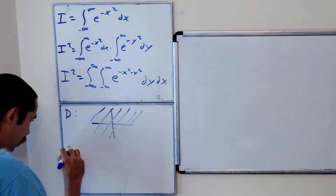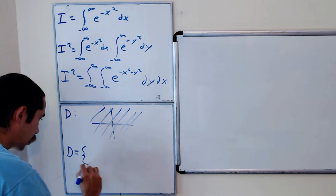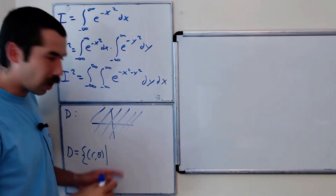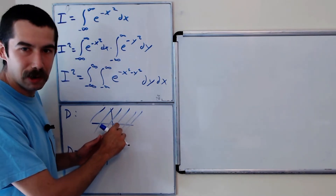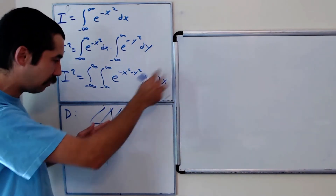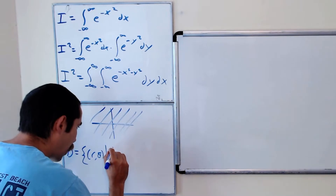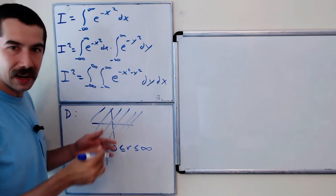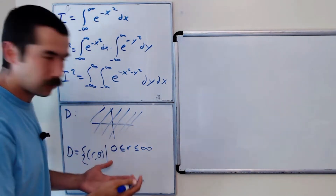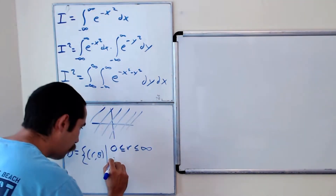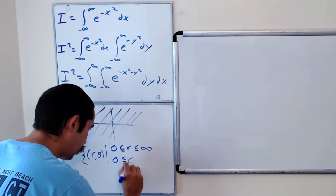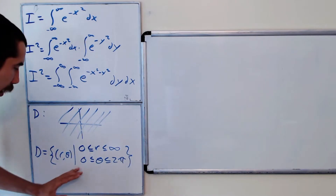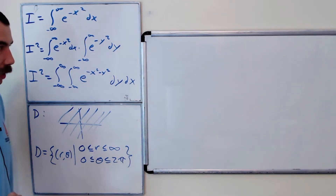How do we express this in polar coordinates? It's a set of r and theta such that: the smallest r could ever be is zero, and the biggest it could be is infinity, so r is bounded by zero and infinity. The smallest theta could be is zero — if we have the whole plane — and the biggest it could be is two pi. So we're going to integrate over this polar region.